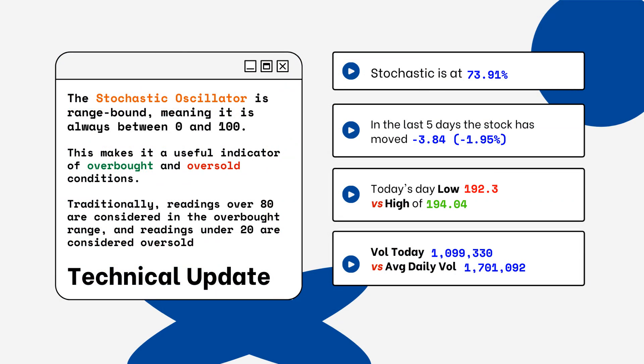You can see on the right side where the stochastic level is on this particular stock. This is a technical update because you want to look for overbought and oversold conditions. Readings over 80% are considered overbought, and readings below 20% are considered oversold. You want to be aware of this when looking at a particular stock.